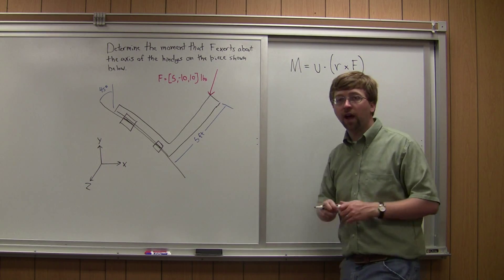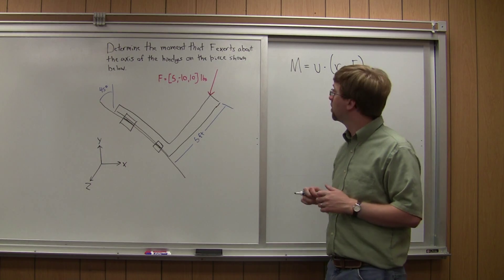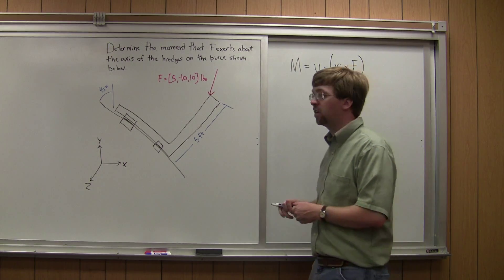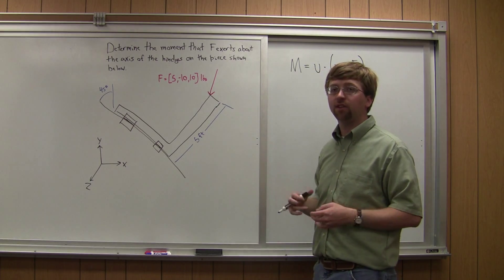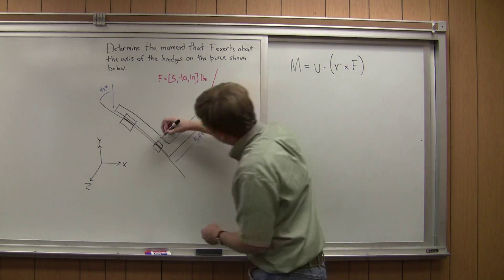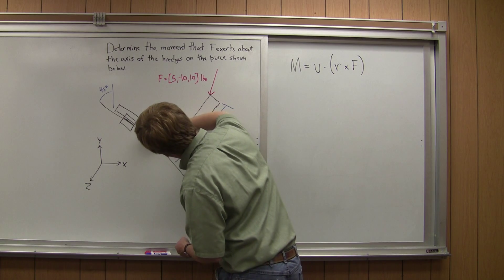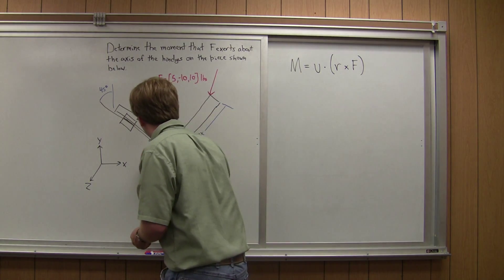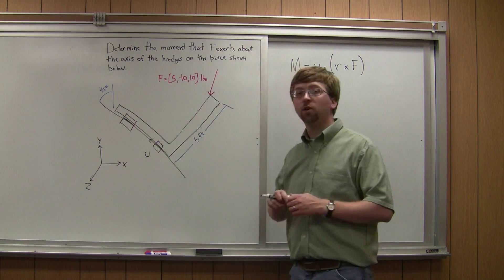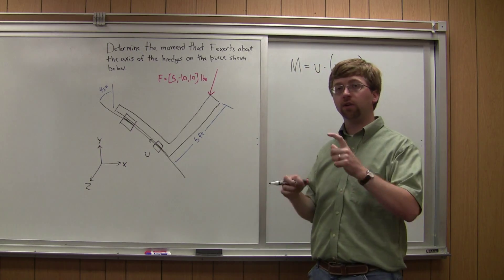And let's go ahead and explain what each of these means. So U is going to indicate the direction of the axis that we're taking this moment about. So U goes along that axis and it's going to be a unit vector. So it's one unit long.